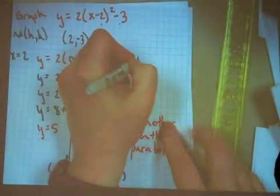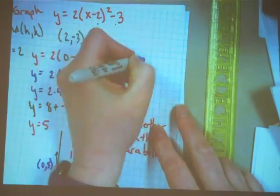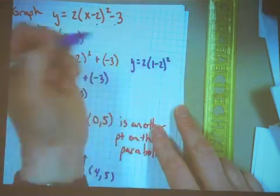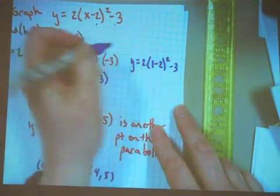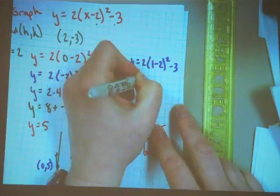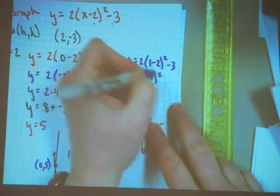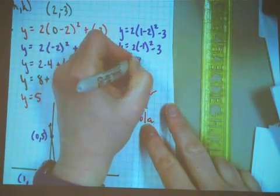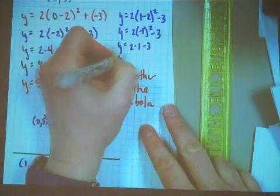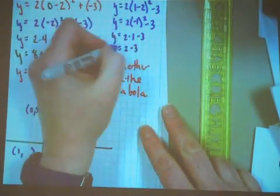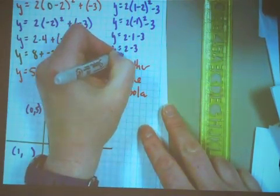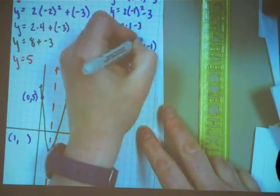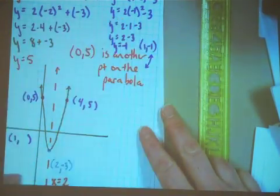So if I come up and I put in the 1, 2 times 1 minus 2 quantity squared minus 3, let's see, that'll be y equals 2 times negative 1 quantity squared minus 3, which will be y equals 2 times 1 minus 3, which will be y equals 2 minus 3. So the y value will be negative 1, which means that the point 1 negative 1 was another point that was on the parabola.